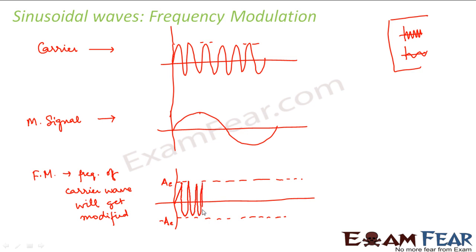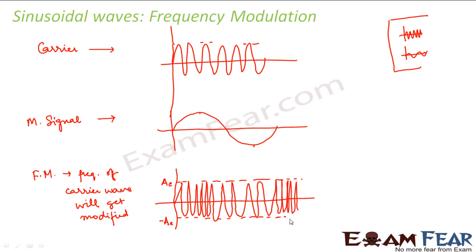Whenever the high area of the message signal comes, the waves of the carrier come very close to each other. After that they become normal again. When the low portion comes, they go wide apart. Again when the high comes, they come very close. So sometimes they are too close, sometimes too far — meaning the frequency is changing as per the message signal.